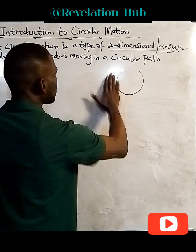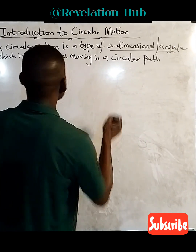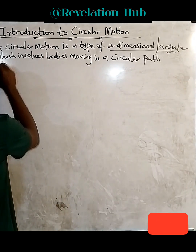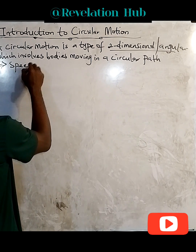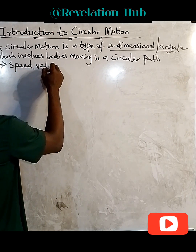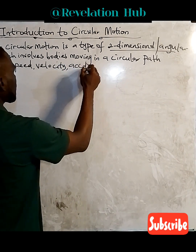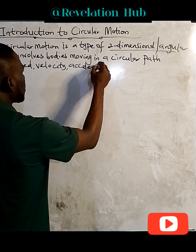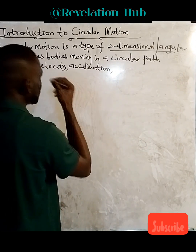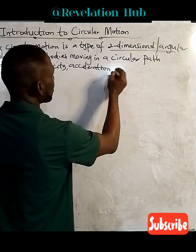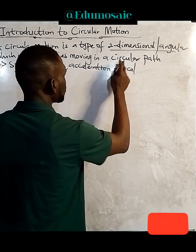So we have concepts, or parameters, in circular motion. We're going to be discussing speed, velocity, and acceleration. We're also going to be discussing force and tension.